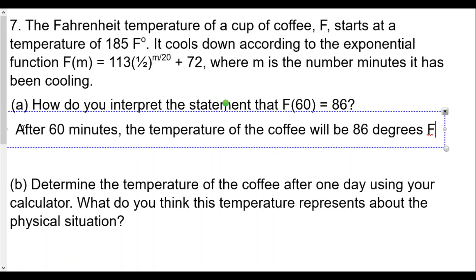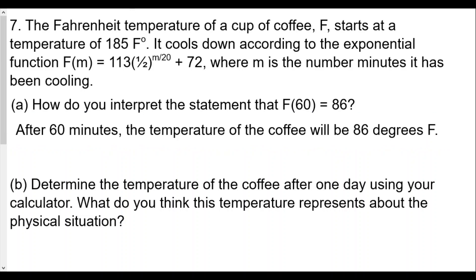Why is that true? Because the x value, which is the m value, is 60 for minutes, and the f value is the temperature in Fahrenheit. So this is our answer: after 60 minutes the temperature of the coffee will be 86 degrees Fahrenheit.